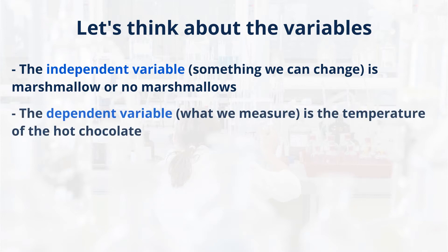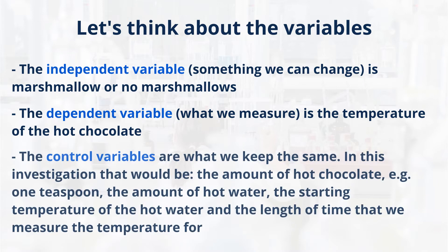We have the dependent variable — this is what we can measure. Today we're going to be looking at the temperature of the hot chocolate. Finally we have the control variables — that's what we need to keep the same. In this investigation that would be the amount of hot chocolate, i.e. one teaspoon, the amount of hot water, the starting temperature of the hot water, and the length of time that we measure the temperature for.